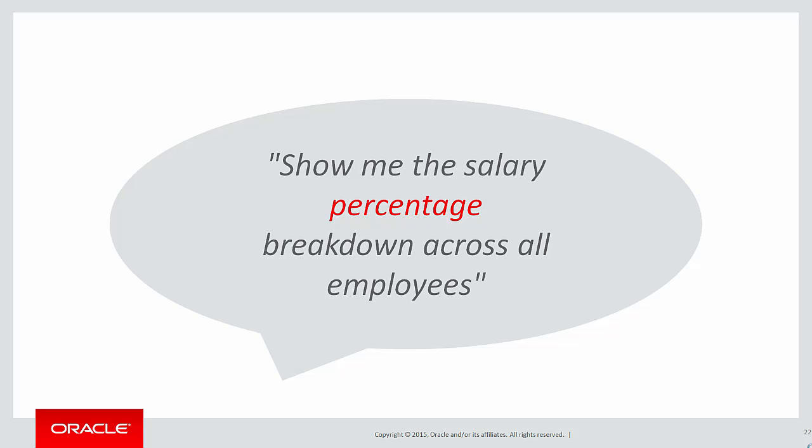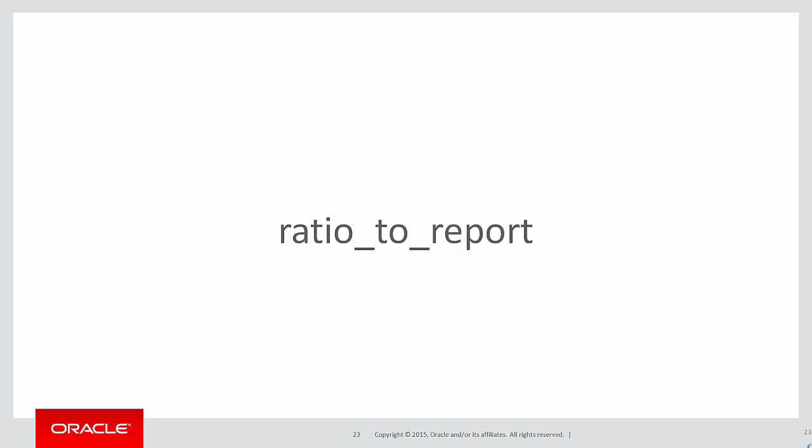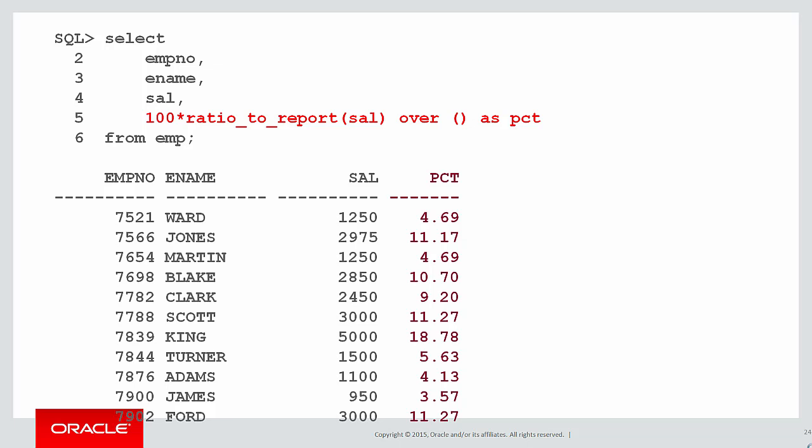The requirement might be: show me the salary percentage breakdown across all employees. Now we could do this with normal analytics we've seen so far — just like most averages being the element divided by the total of all elements. But rather than do that repeatedly, we actually have our own special function to do it called ratio to report. This is a very simple analytic — ratio to report of salary over the entire set answers our requirement. You'll notice they're multiplied by 100; by default the percentage is between zero and one, so multiplying by 100 puts the percentage in our conventional format.